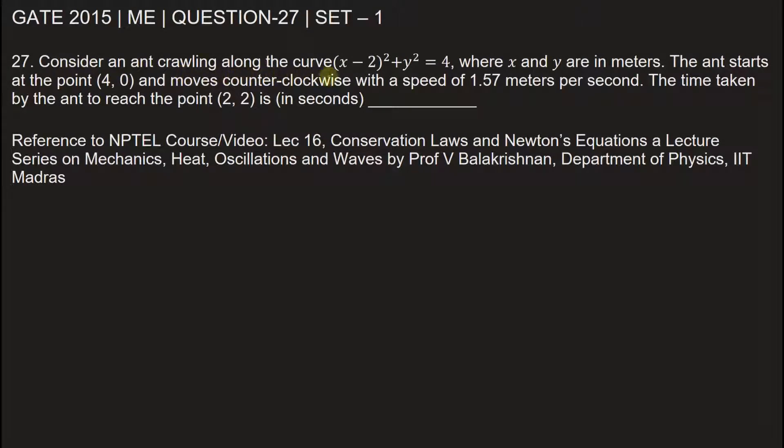Consider an ant crawling along the curve (x - 2)² + y² = 4, where x and y are in meters. The ant starts at the point (4, 0) and moves counterclockwise with a speed of 1.57 meters per second.